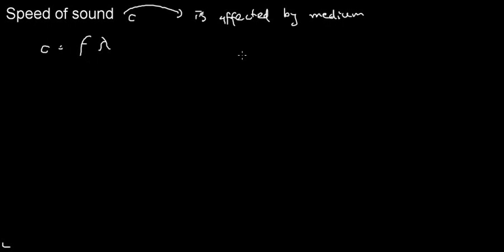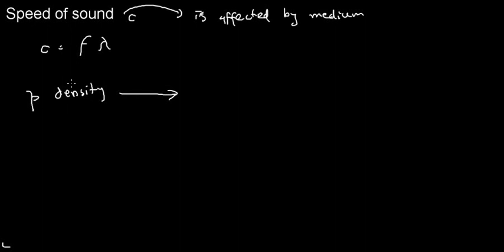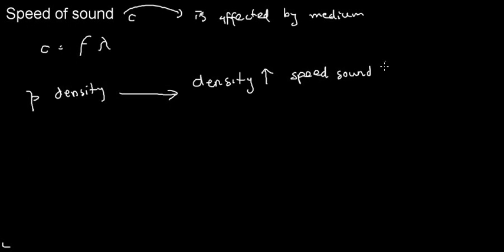There are two main properties of the medium that may affect the speed of sound. The first is density, denoted by a lowercase rho (ρ). Density is basically how dense the material is. When the material is more dense, it slows down the speed of sound — just like light also slows down when encountering denser materials. So when density goes up, speed of sound goes down.